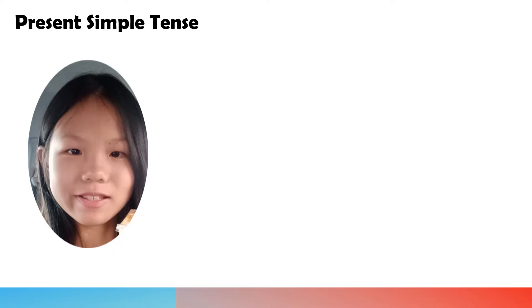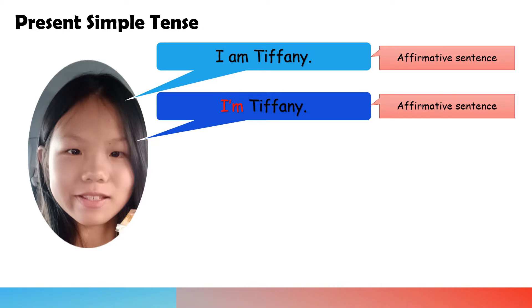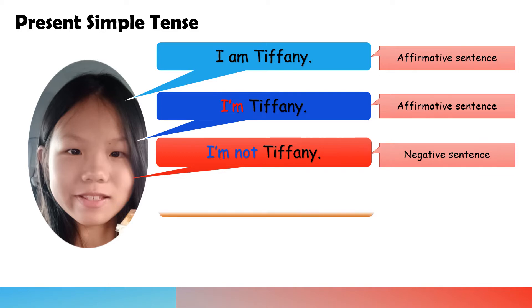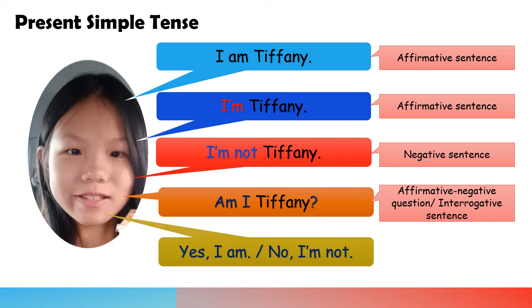Now, let me introduce some types of sentences about present simple tense. 'I am Tiffany' — it is an affirmative sentence. 'I am not Tiffany' — it is a negative sentence, and 'No, I am not' is a negative answer.